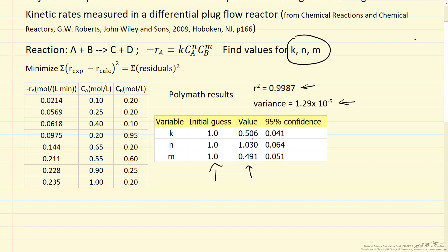So the rate constant is 0.506, which has units for this particular order reaction - first order in A and approximately half order in B. And the confidence interval...